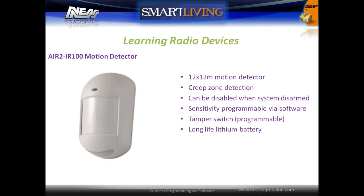The IR100 motion detector is a 12x12m motion detector with creep zone detection and can be disabled when the system is disarmed to save battery life. Sensitivity is programmable via the software and the tamper switch is also programmable. The detector operates with a long life lithium battery.